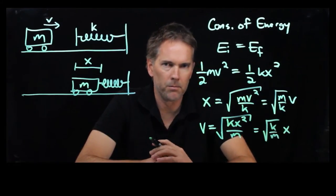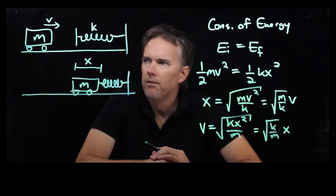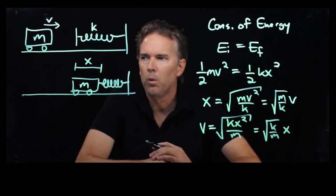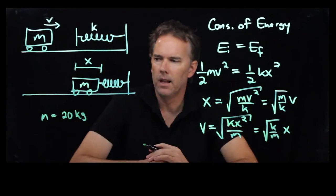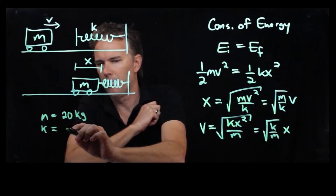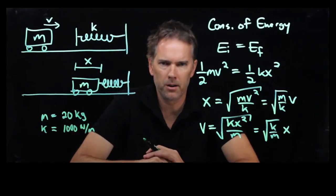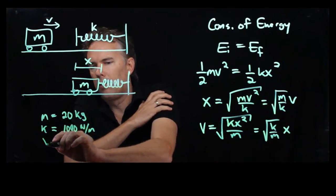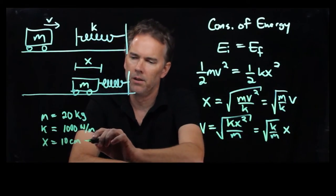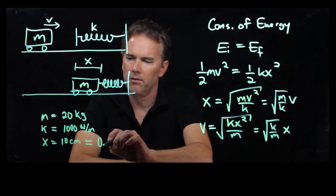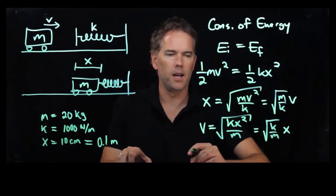All right, let's try some numbers and see what works out. OK, let's pretend that the mass of this thing is, how about 20 kilograms? Let's say the spring is fairly strong. So we'll say 1,000 newtons per meter for the spring constant. And let's say that x is 10 centimeters. That's how far the spring got compressed. In SI units, of course, that's 0.1 meters.